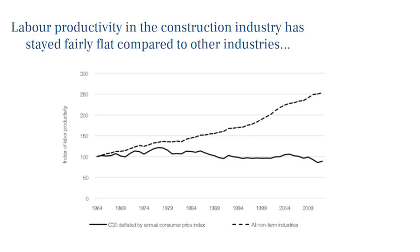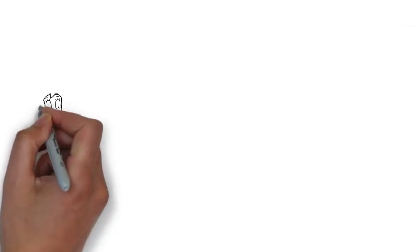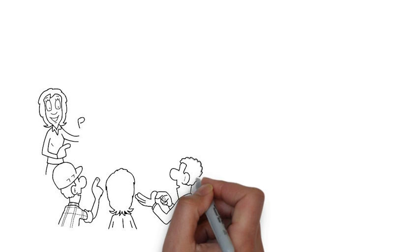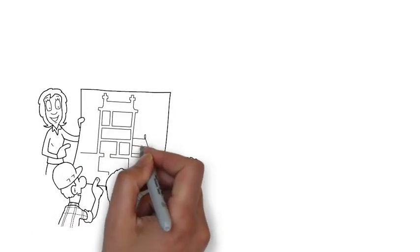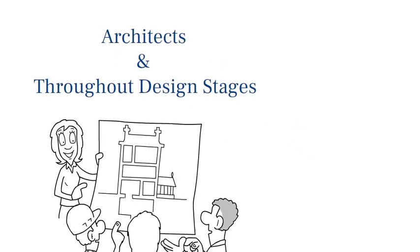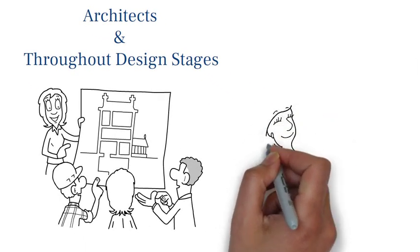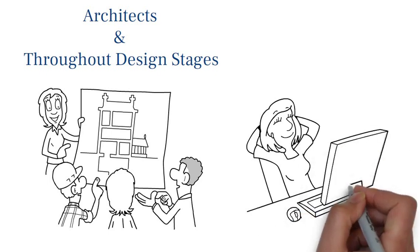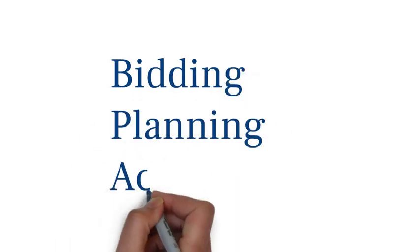Now this is not to say that the construction industry hasn't done anything to move with the times. Certain professions and stages of a construction project have tried to keep up with technological advances, particularly architects and throughout design stages. This has seen the initial stages of construction projects embrace change and go digital, effectively using software that has improved bidding, planning and accounting processes.